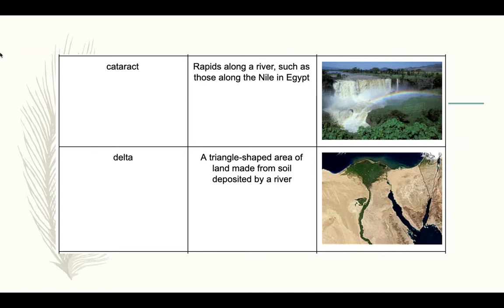Another term you need to know for the section is delta. A delta is a triangle-shaped area of land made from soil deposited by a river. You can see the green going down — that's all along the Nile River. The water floods along the Nile and creates the fertile land. But as you get north in northern Africa, close to the Mediterranean Sea, the Nile River kind of fans out and creates this delta, this triangle-shaped area of land.